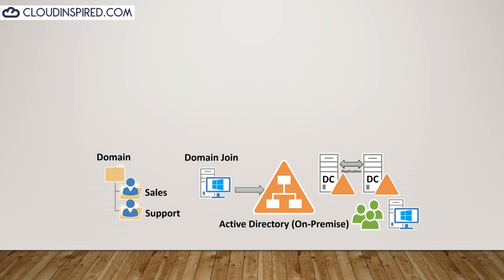Group Policy can then be applied to each OU to implement specific configurations for users and computers — like configuring operating system security, adding firewall rules, or managing applications like Microsoft Office or a browser. We can communicate with the directory using LDAP and protocols like Kerberos and NTLM. Servers not promoted as domain controllers, as well as end user devices like PCs and laptops, would join the domain.